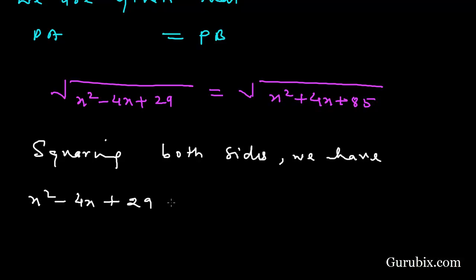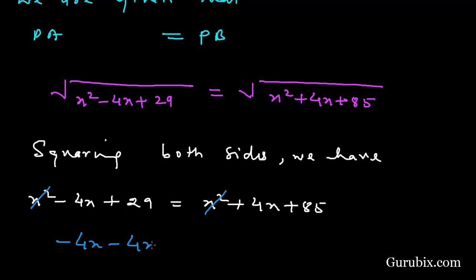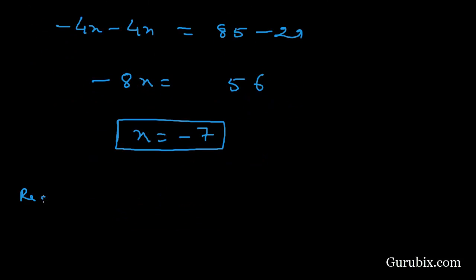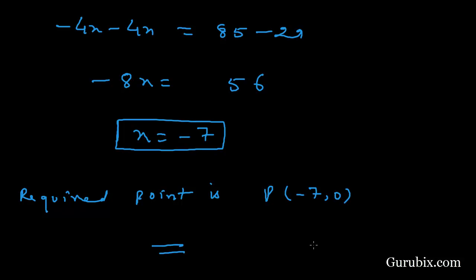We cancel x² from both sides, giving -4x - 4x = 85 - 29, which means -8x = 56, so x = -7. Therefore, the required point P has coordinates (-7, 0). This is the solution of the question. Thank you.